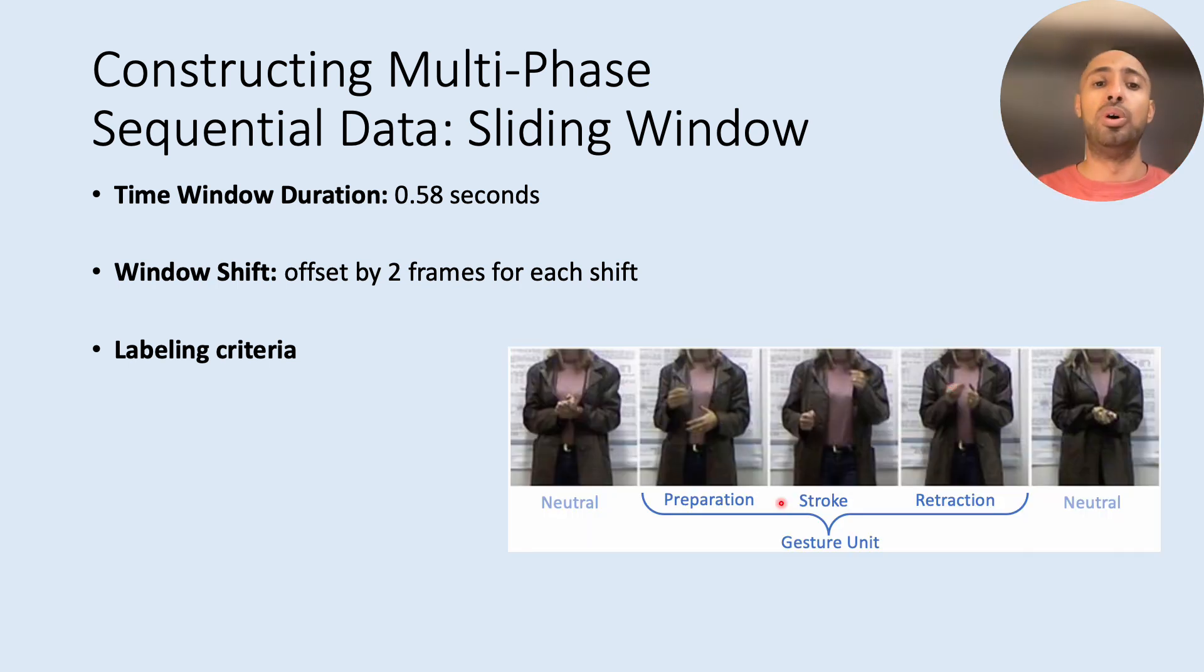And the labeling criteria of this sliding window approach was taking as an anchor the segmented gesture strokes in our dataset. And if this moving time window overlaps, for example, less than 50% from the beginning of a gesture, it's labeled as a preparation phase. And if it overlaps with a gesture stroke more than 50%, then it's labeled as a gesture stroke. And if it overlaps at the end of a gesture stroke, then we labeled it as a neutral movement or non-gestural movement.